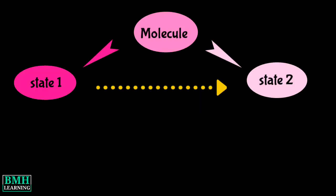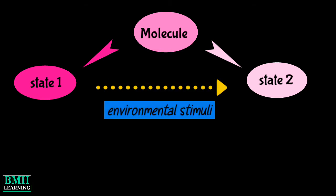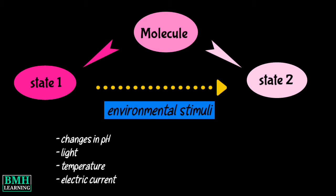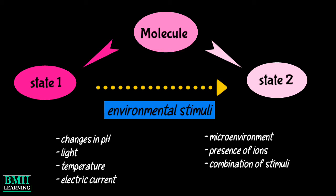Hello friends, welcome to BMH Learning. This video is about molecular switches. A molecular switch usually consists of a single molecule which can shift controllably between two stable states. The molecules may be shifted between the states in response to environmental stimuli or triggers such as changes in pH, light, temperature, electric current, micro-environment, or in the presence of ions and other ligands. In some cases, a combination of stimuli is required.